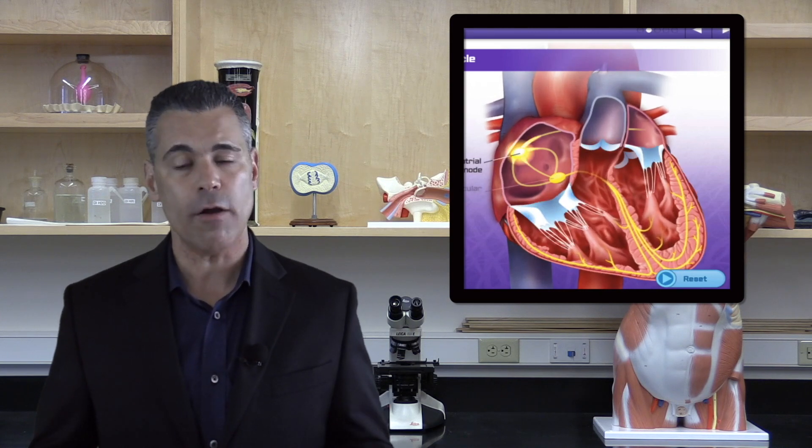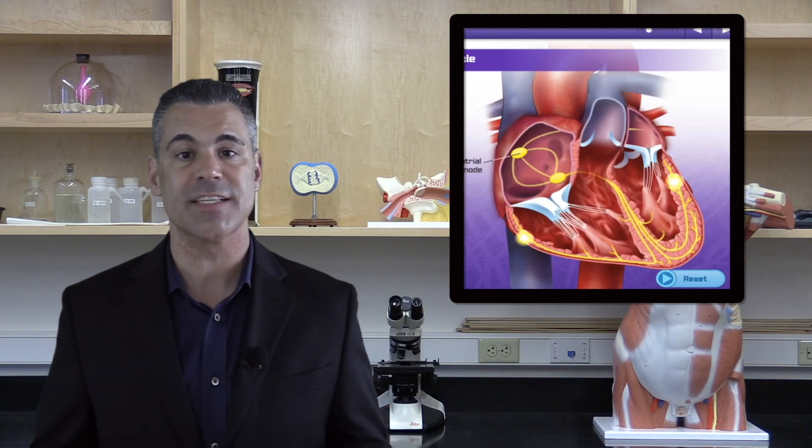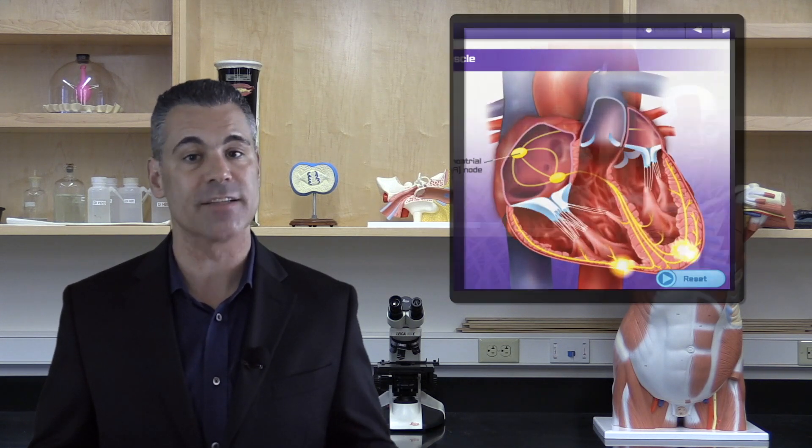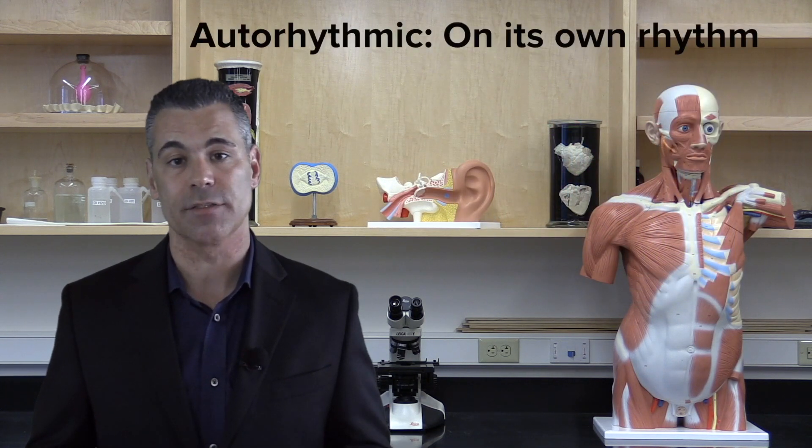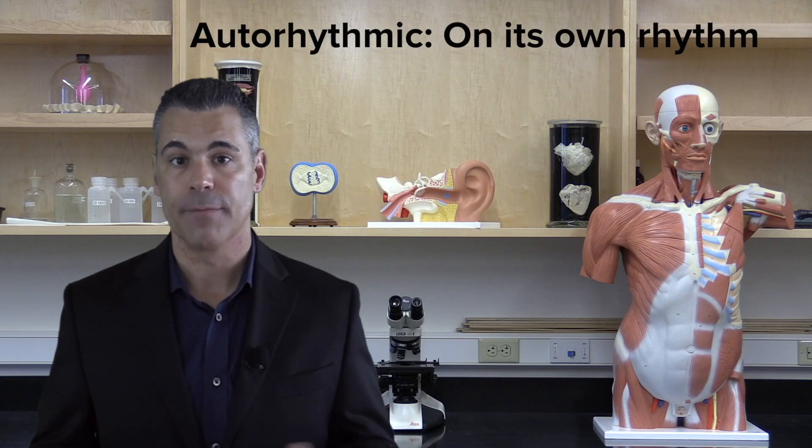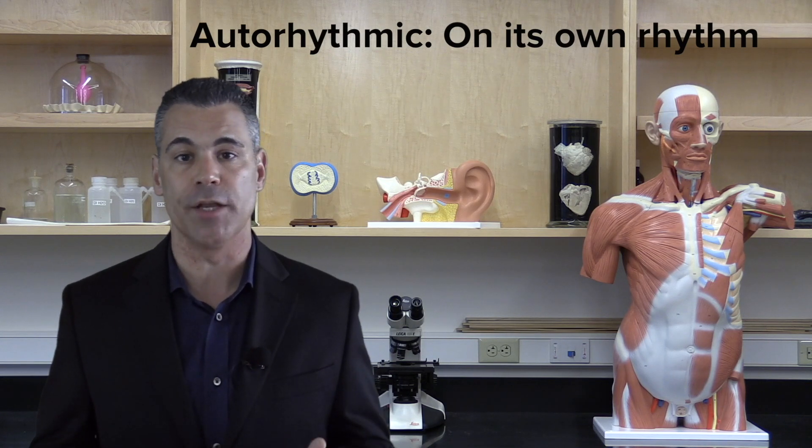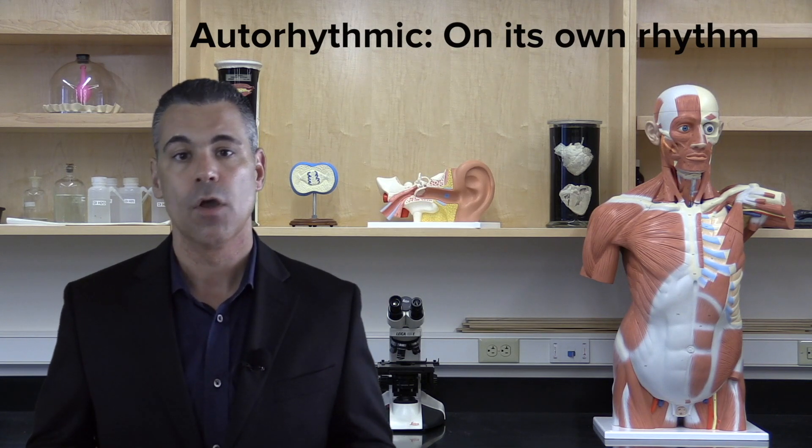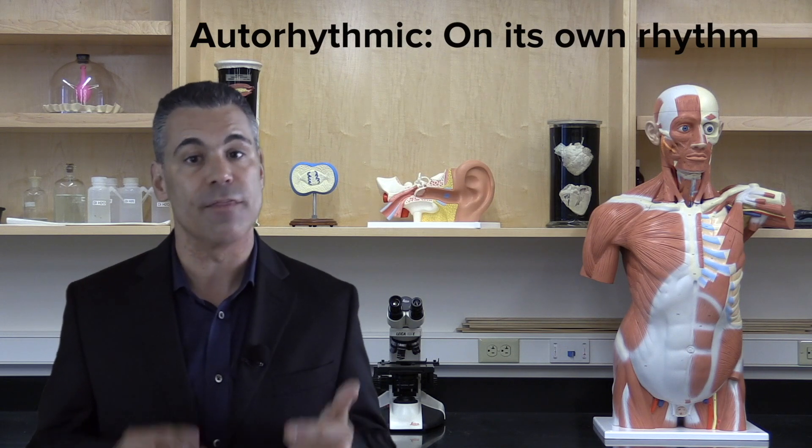You see, unlike skeletal muscle, cardiac muscles don't need a nerve to stimulate an action potential and its contraction. That's why they're called auto-rhythmic cells. Auto means self, like an autobiography is written by the person it's about. Cardiac muscle cells make their own rhythm.